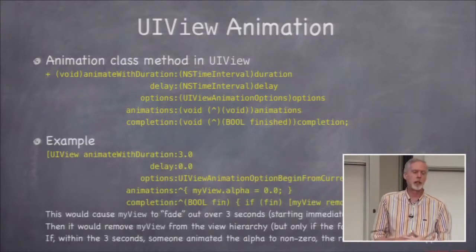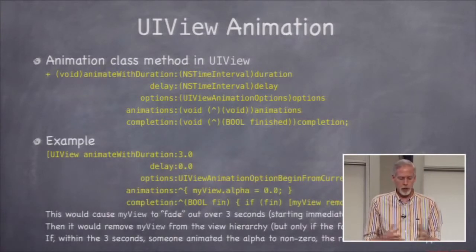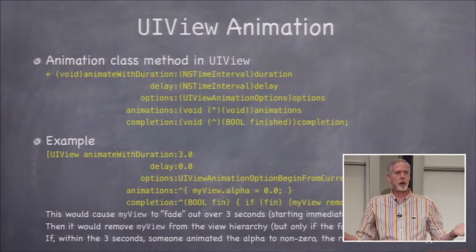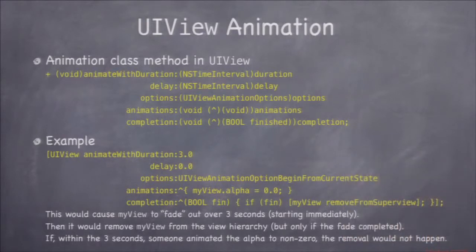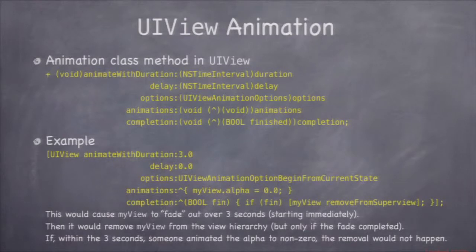Here's an example of calling it. I'm calling UIViewClassMethodAnimateWithDuration. This animation is going to take three seconds. What I'm going to do is, whatever state my view is in, make it fade out and disappear. In the animation block, myView.alpha equals zero, which means fully transparent. So it's going to go from whatever alpha it's at now to zero in three seconds on screen.